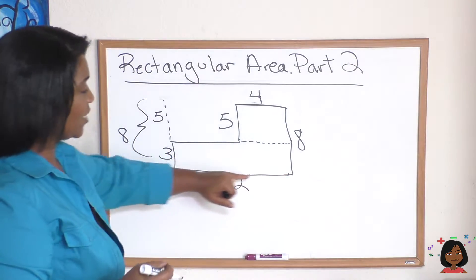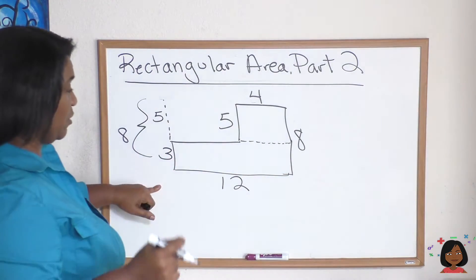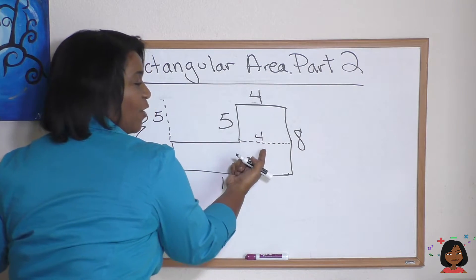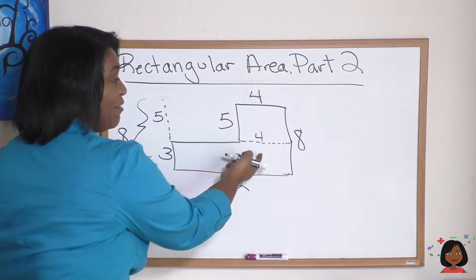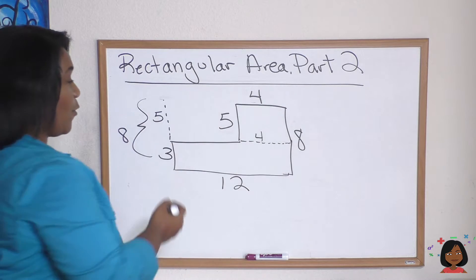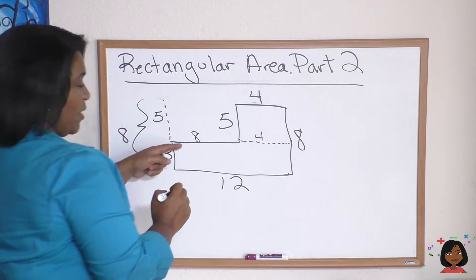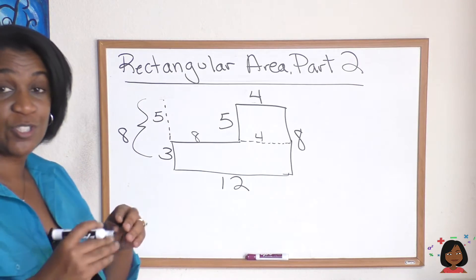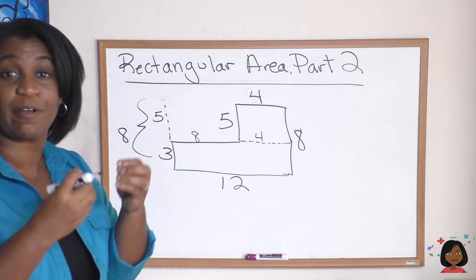And this entire side is 12, which means this entire side is 12. But we know that this piece is four because it's a rectangle. There's four on top. 12 minus four gives me eight, which makes this side eight. I now have what I need to do length times width of two separate rectangles.